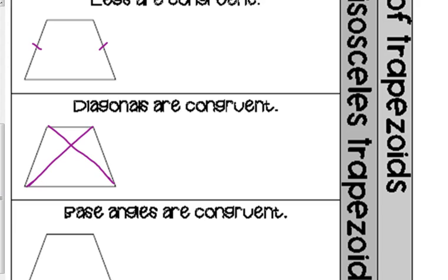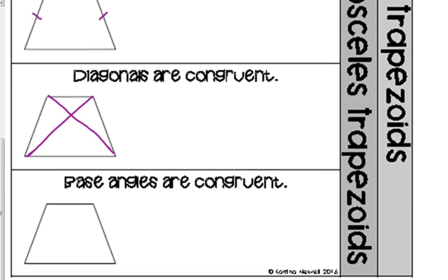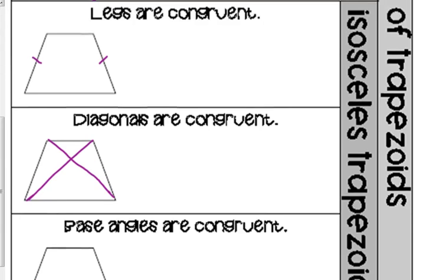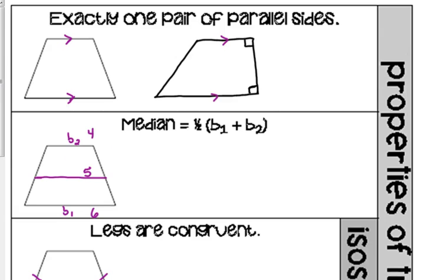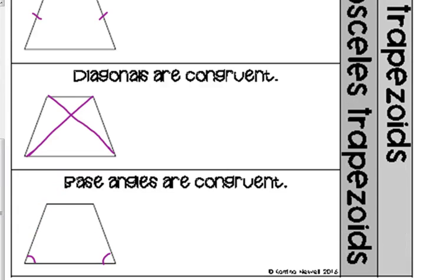In an isosceles trapezoid, the base angles are congruent — that's only true for isosceles trapezoids. In a regular trapezoid, those base angles are not congruent. Technically, the shorter parallel side is also a base, so a trapezoid can be flipped over with the shorter side on the bottom — it's still a trapezoid.